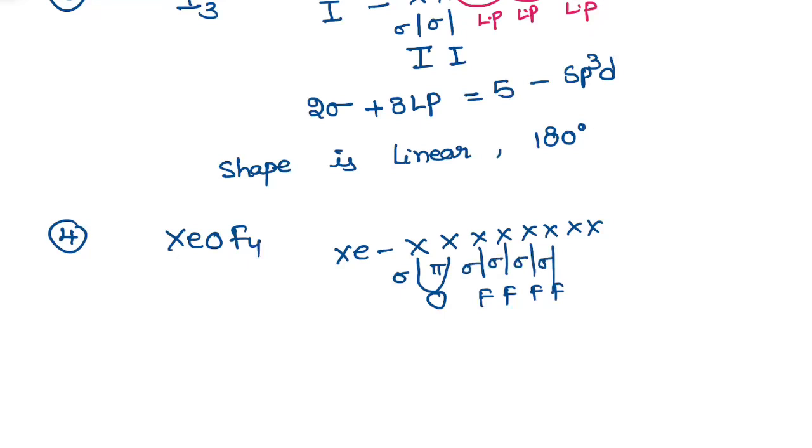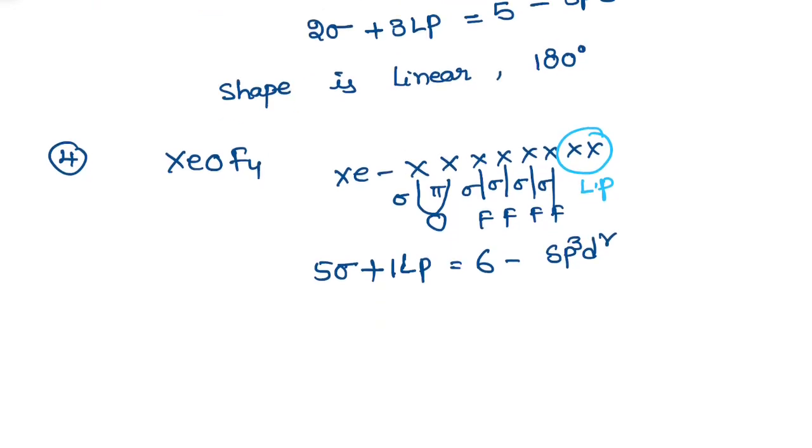Therefore total how many sigma bonds are there? Total five sigma bonds are there, and one more is one lone pair is there. You have to take it. You need not think about pi bonds, only sigma bonds and lone pairs. Five sigma bonds plus one lone pair - total six. That means sp³d². So hybridization is sp³d².